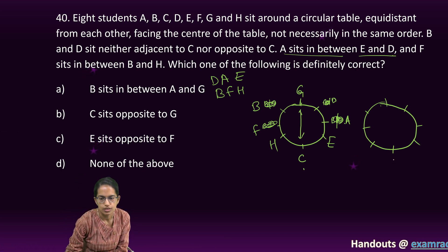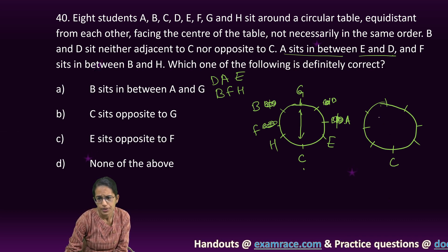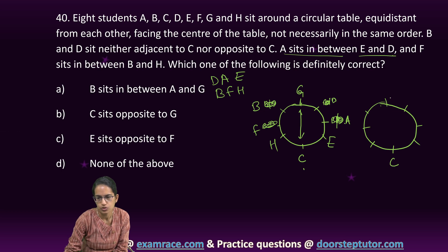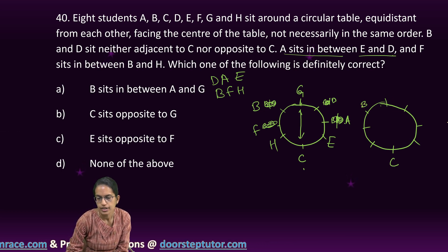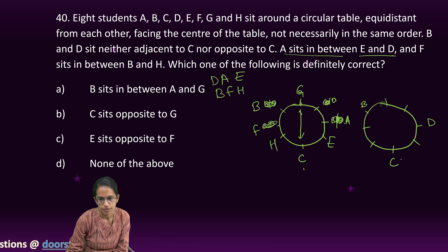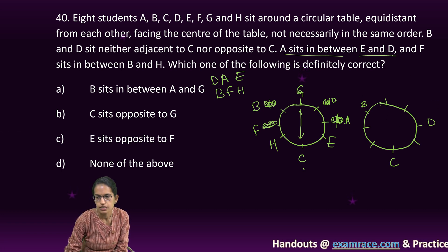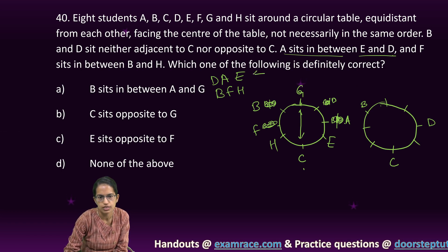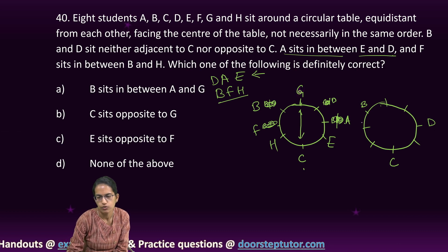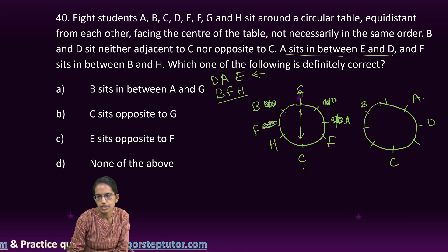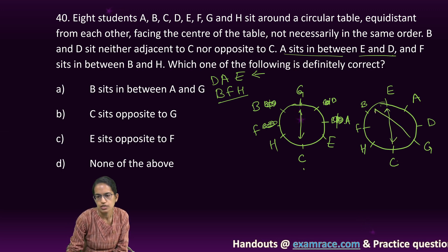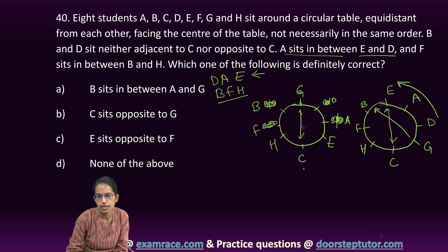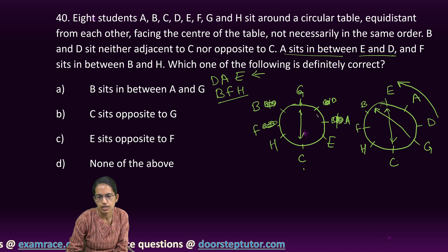Let me focus on another case. C is sitting here. B and D cannot be adjacent to C and opposite to C. Let me put B here and D here. I arrange D, A, E together and B, F, H together. So here would be G. Opposite to C in this case is E and opposite to G is B.